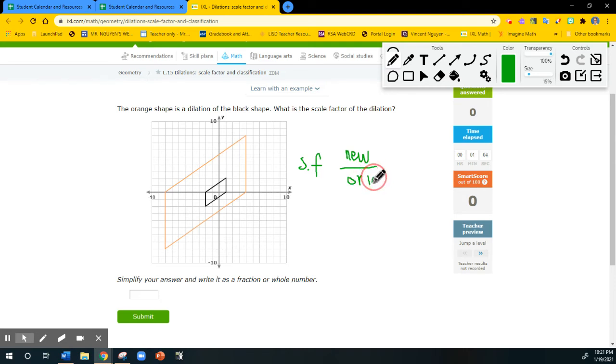I'm writing really slow because my mouse is not working very well and I do not have my stylus. So make sure you read the direction or read the description. The orange is the new. If it is a dilation of the black shape, then the orange is the new. Make sure you are good on identifying which is new and which is old.